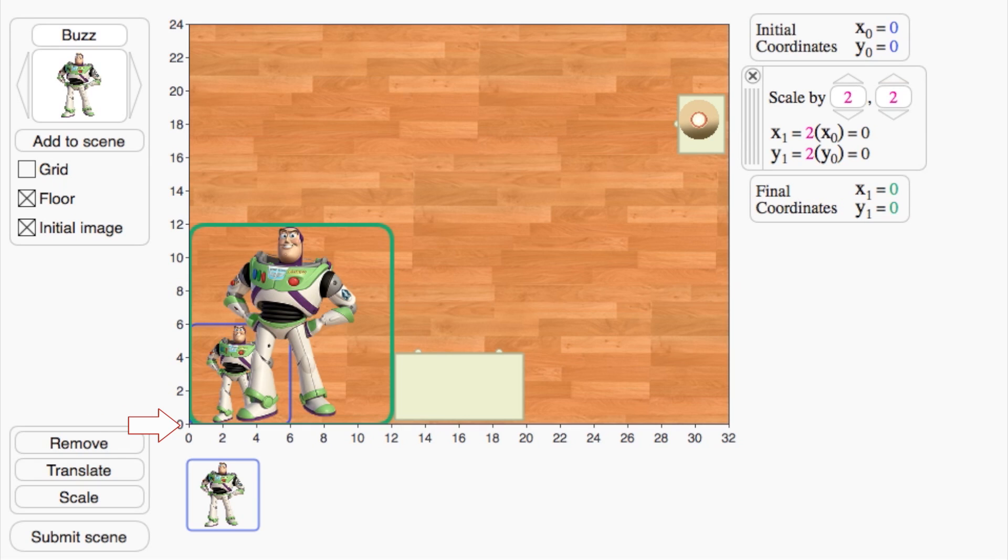As before with translation, I can pick any initial point. Call its coordinates x0 and y0. After scaling, it becomes a point x1, y1. This formula shows that the coordinates of each point gets multiplied by two.